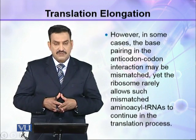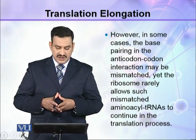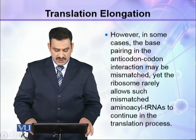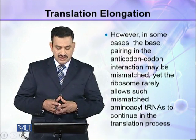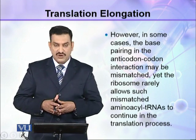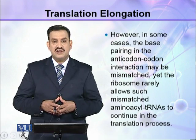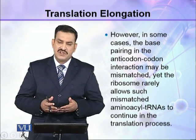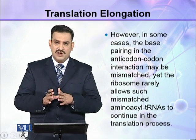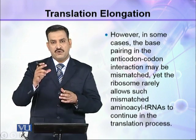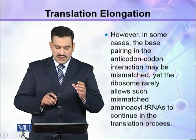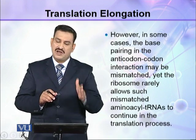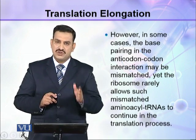However, in some cases the base pairing in the anticodon-codon interaction may be mismatched. Yet, the ribosome rarely allows such mismatched aminoacylated tRNAs to continue in the translation process. If due to some error a mismatch occurs and an incorrect aminoacyl tRNA attaches at a site, the ribosome will rarely allow translation to proceed; instead, translation will stop at that point.